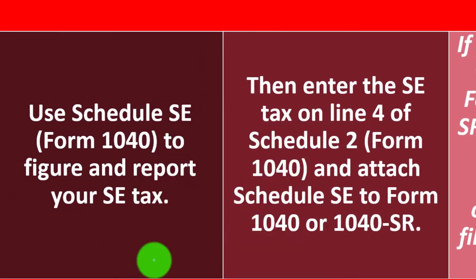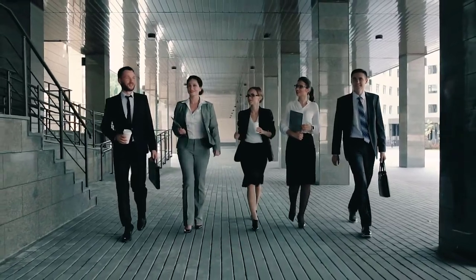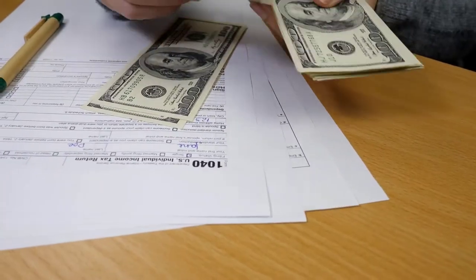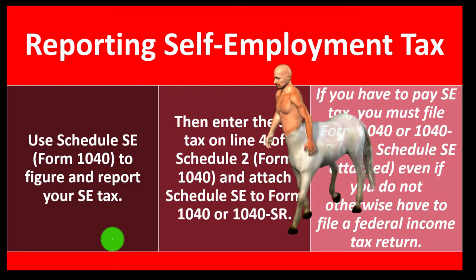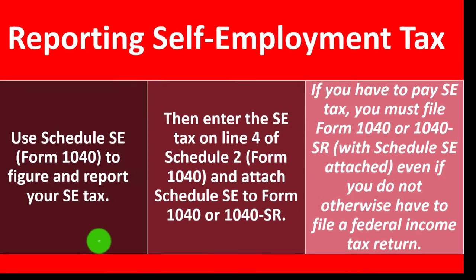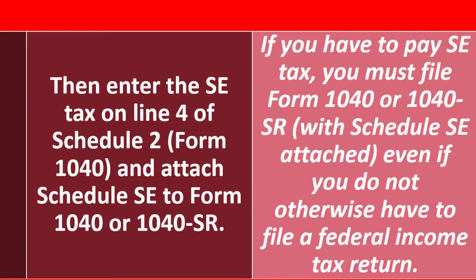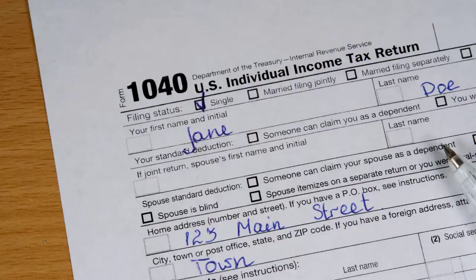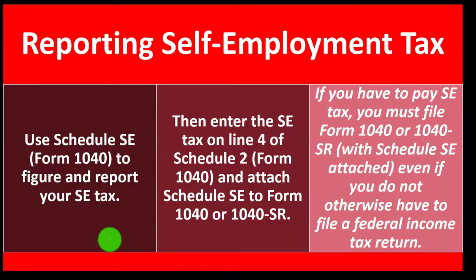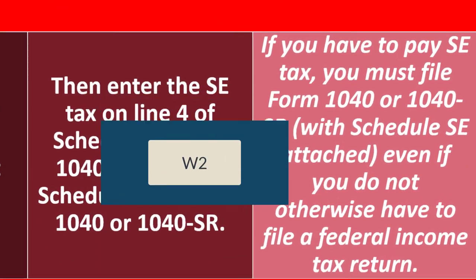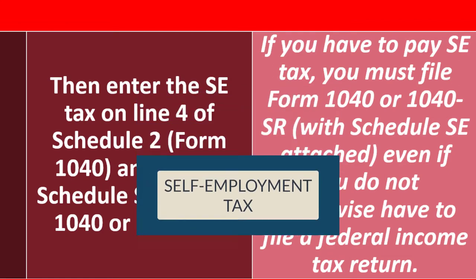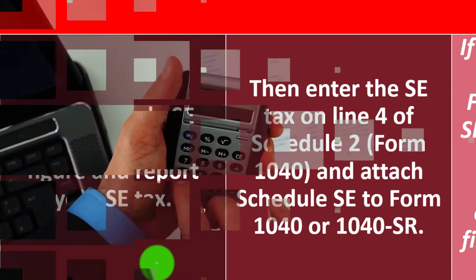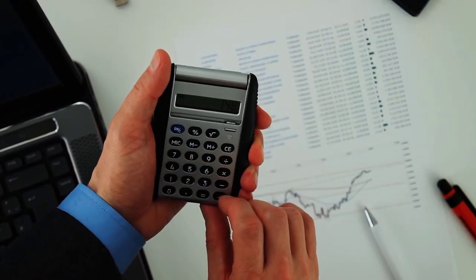When we usually think about Form 1040, we think about income tax as the primary thing being reported. The self-employment tax, if we were a W-2 employee, would be in the form of payroll taxes which have already been taken out and paid on our behalf by the employer — therefore reported on the W-2, but not something we typically have to do anything with on Form 1040.